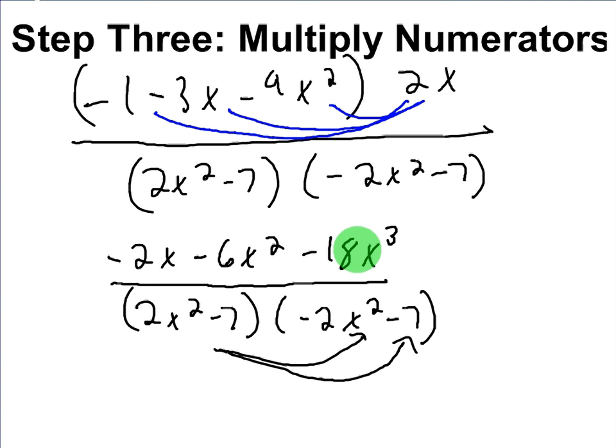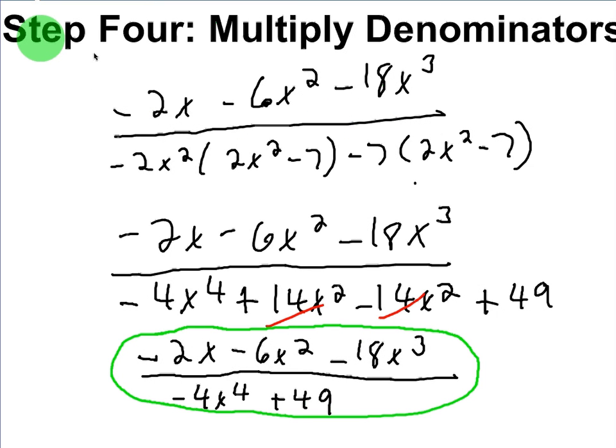In order to multiply the bottom, again, you'd have to FOIL that, which I'll show you in a second. So let's FOIL the bottom out. Here's what I was talking about. When you FOIL the bottom out, you end up with plus 14x squared minus 14x squared, which ends up becoming 0. So when you FOIL the bottom, you get negative 4x to the 4th plus 49, which is a little bit simpler than two sets of factors.